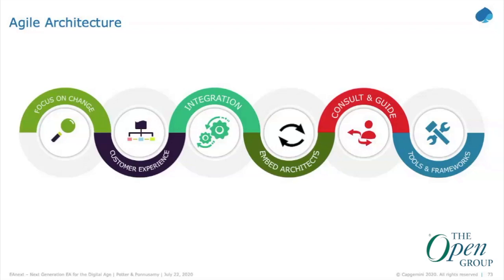The last element of agile architecture is tools and frameworks — integrating your EAM tools and frameworks with agile tools and making sure both are bi-directional and feeding each other. With that, I'll turn it over to Prakash to talk about automation.